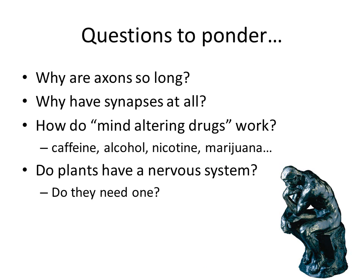Here are a couple of last questions that may be lingering. Why are axons so long? It's because they can be used to transmit signals quickly. Remember that the synapse is the choking point, so reducing the number of synapses can reduce the time for transmission. So why do we have synapses at all? Because these are the decision points — they are the intersection of multiple neurons and they are the control points. Now, how do mind-altering drugs work? They affect the neurotransmitter release, uptake, or breakdown.